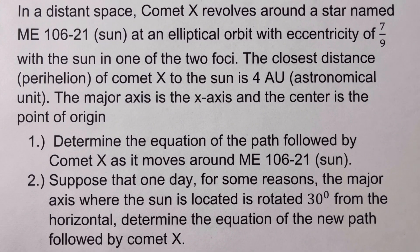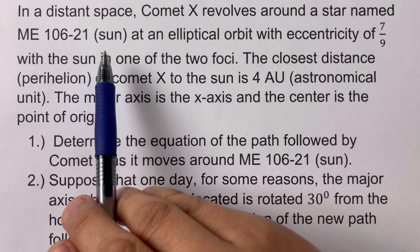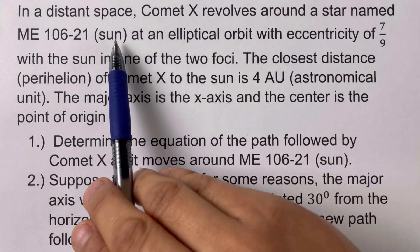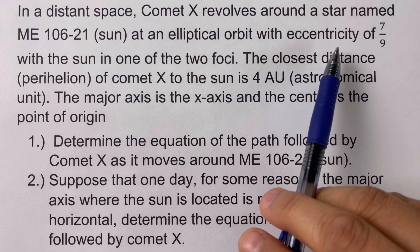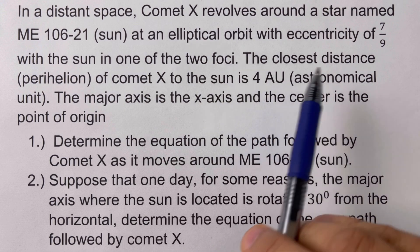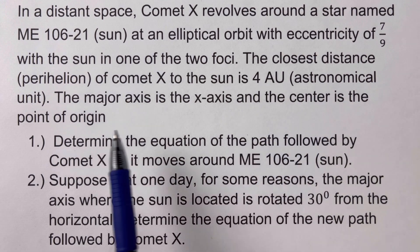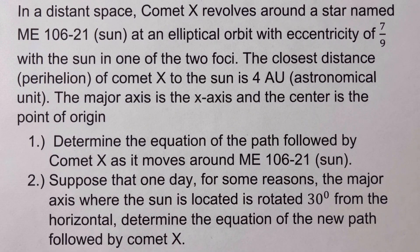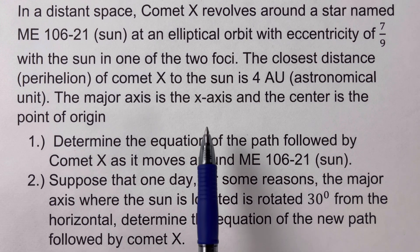In a distant space, Comet X revolves around a star named ME 106-21, which is the sun. In science, the star and sun are used interchangeably. It follows an elliptical orbit with an eccentricity of seven-ninths, with the sun or star in one of the two foci. The closest distance — called the perihelion — of Comet X to the sun is four astronomical units (AU). One astronomical unit is approximately 93 million miles or 150 million kilometers.